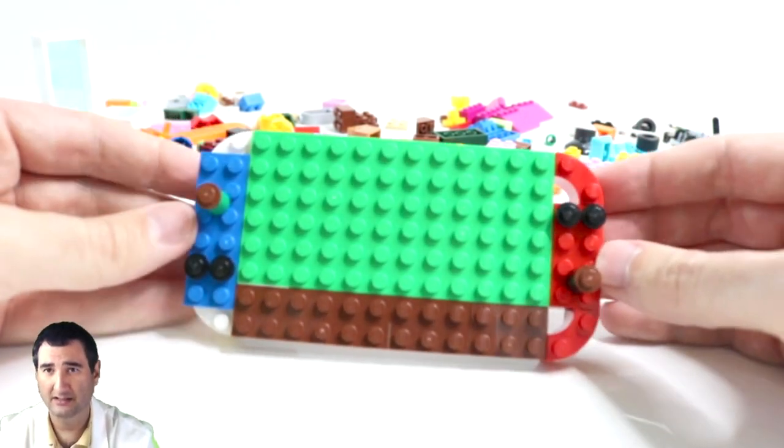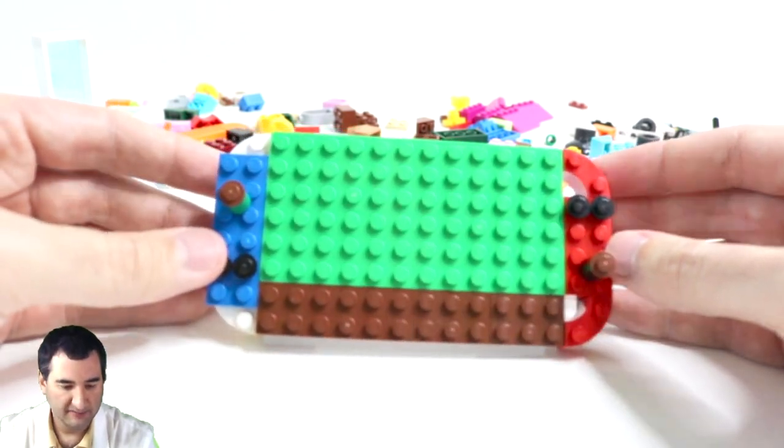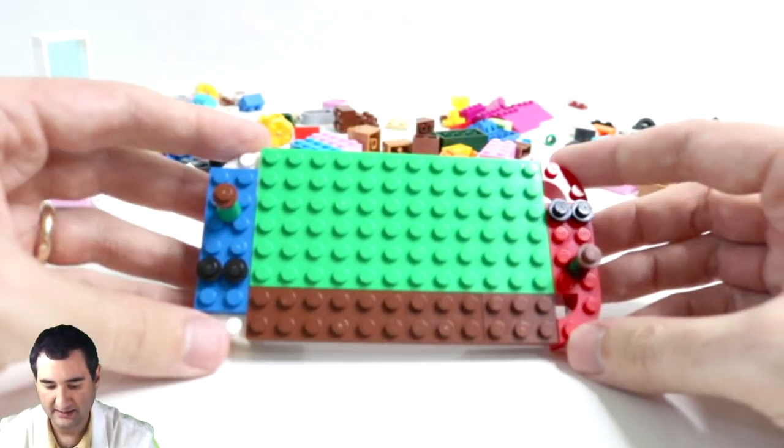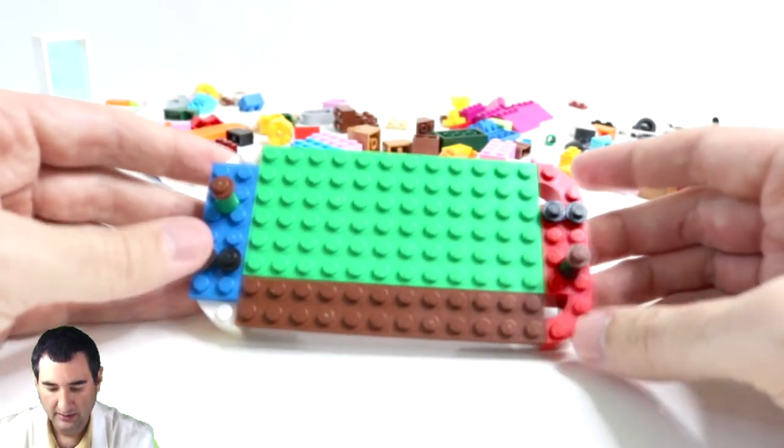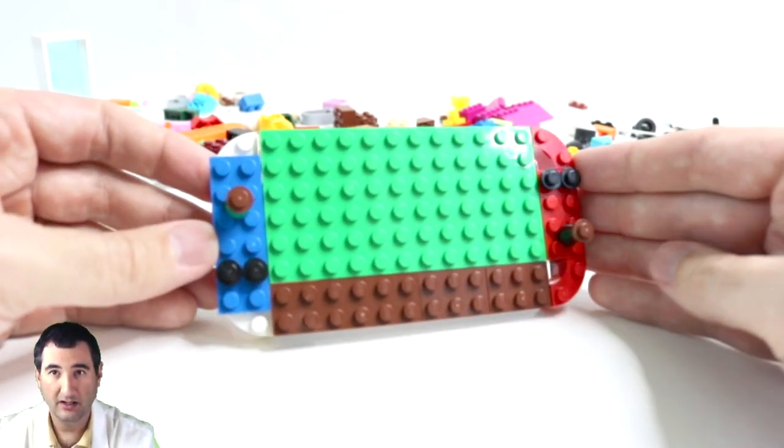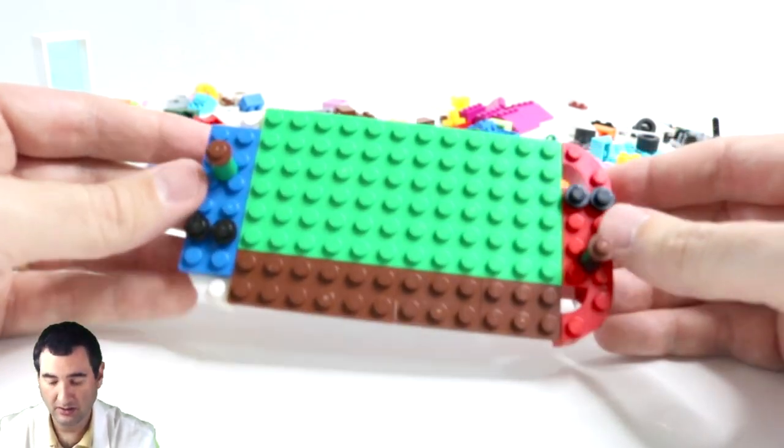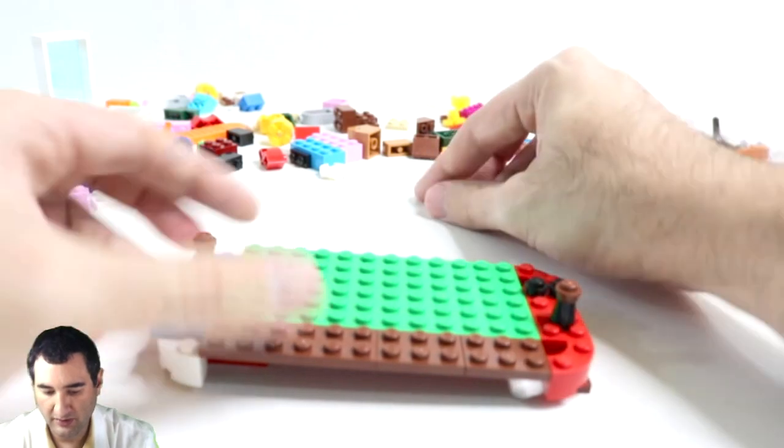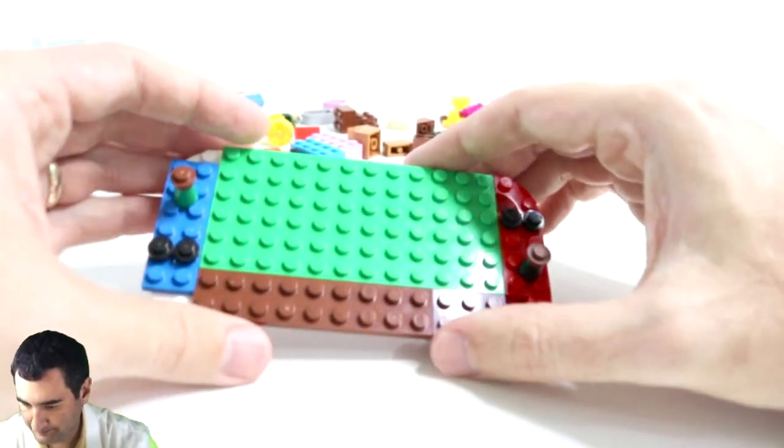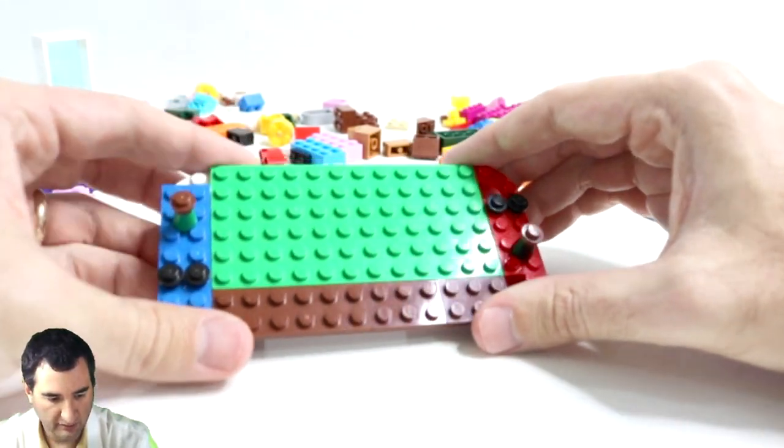In five minutes of time with 221 pieces and not all the colors in the world, it looks enough like a Nintendo Switch that you could pass for one. Now the only issue is it doesn't have anything on the screen.